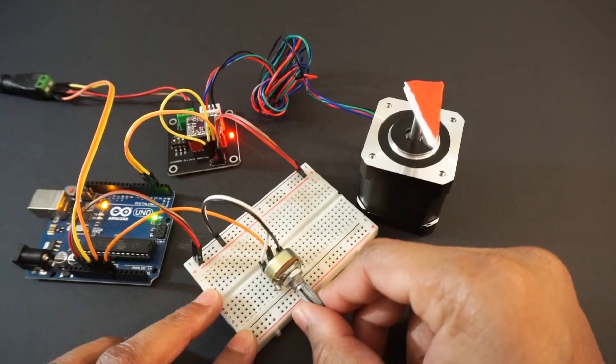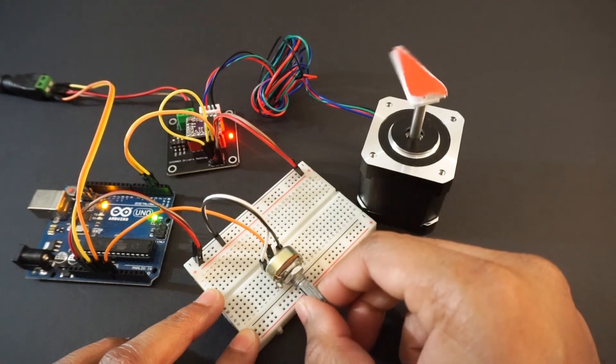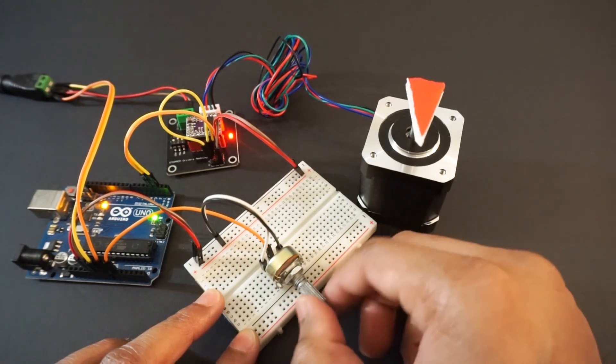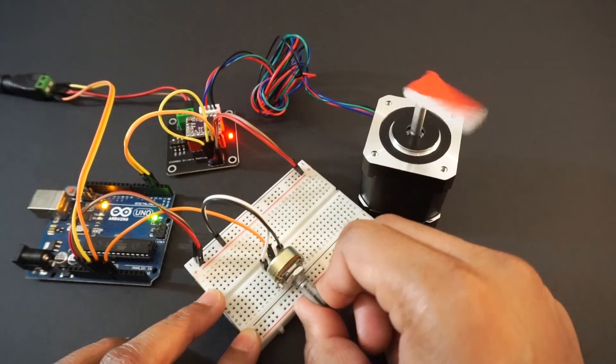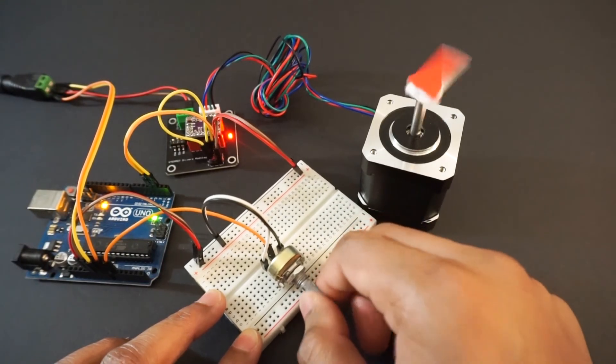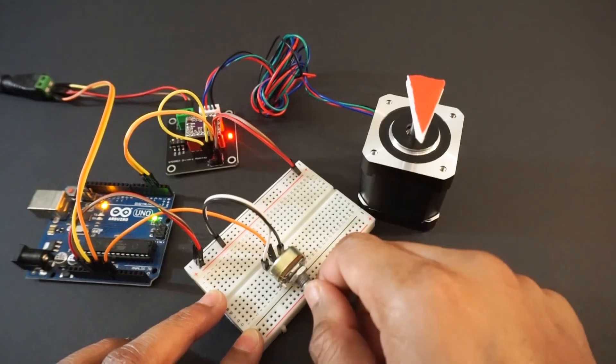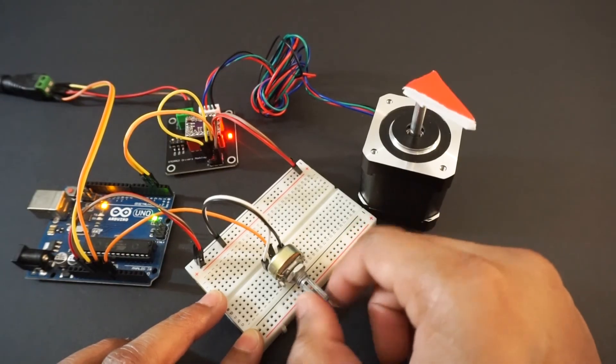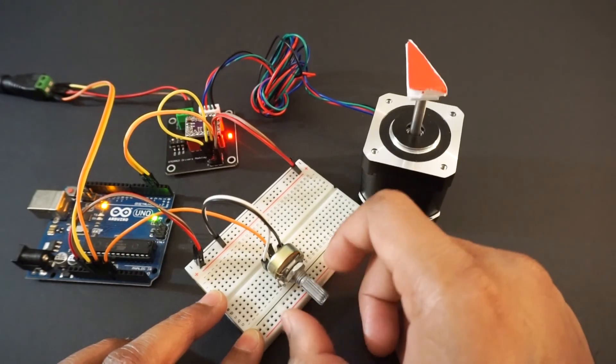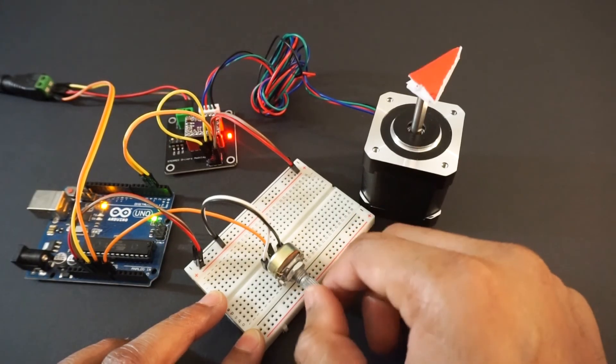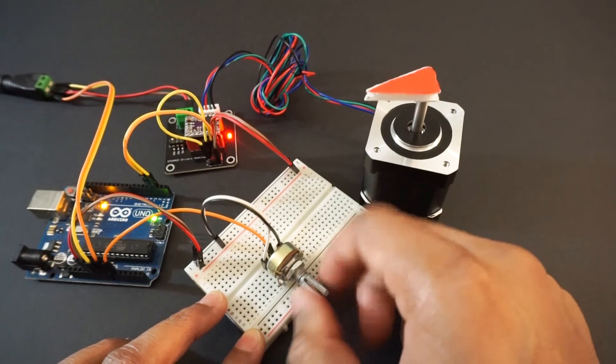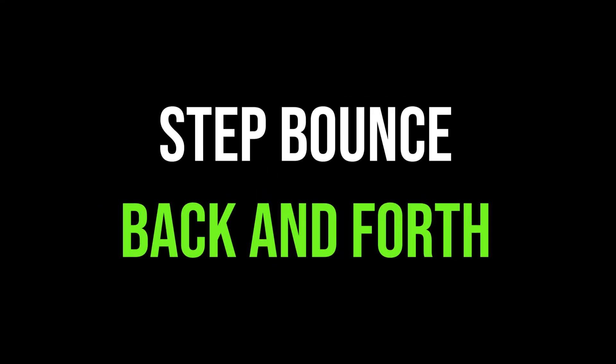Upload this code. You can see that stepper motor follows the potentiometer rotation. Now let's see how we can make the stepper motor bounce back and forth.